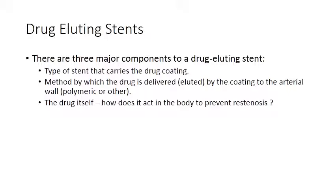There are three major components to a drug eluting stent. First, the type of stent that carries the drug coating — which can be any number of metals or polymers. Second, the method by which the drug is delivered to the arterial wall — the drug might be embedded in a polymer coated on the stent, or coated directly onto the bare metal itself. Third, the drug itself and how it acts in the body to prevent re-stenosis.